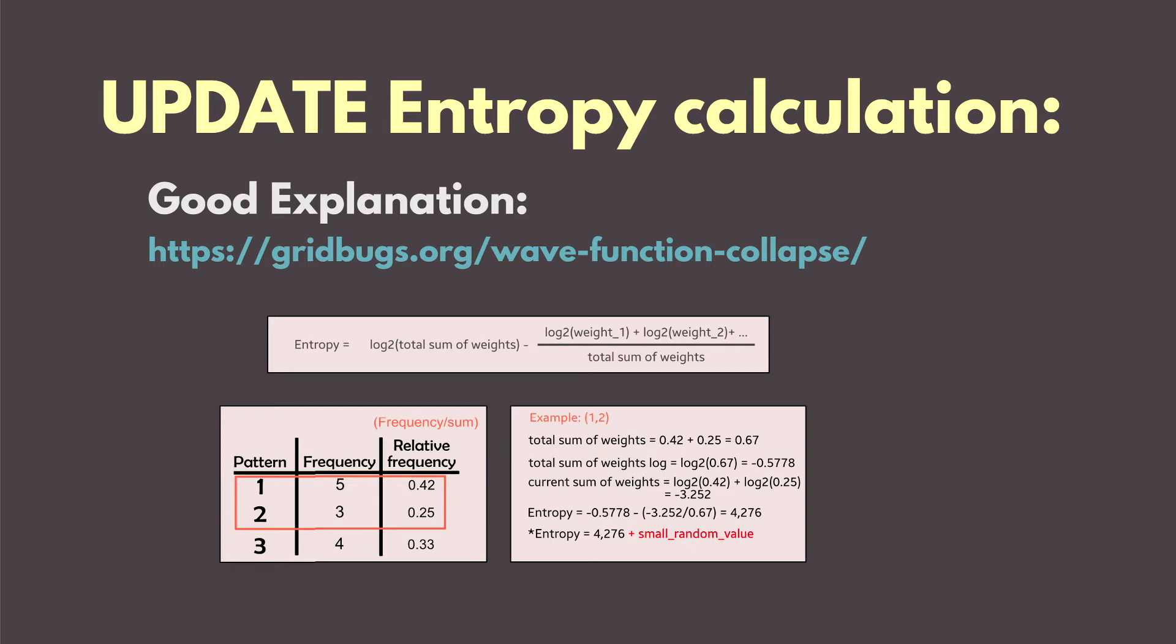The valid solution is that we only take the relative frequencies for the total sum of weights for the patterns that are possible for our cell. So it might be all of them at the beginning stage of the wave function collapse algorithm.